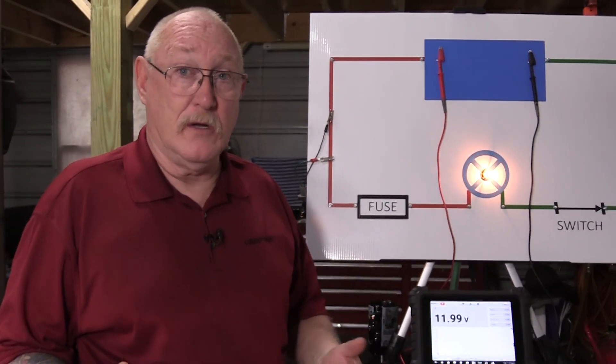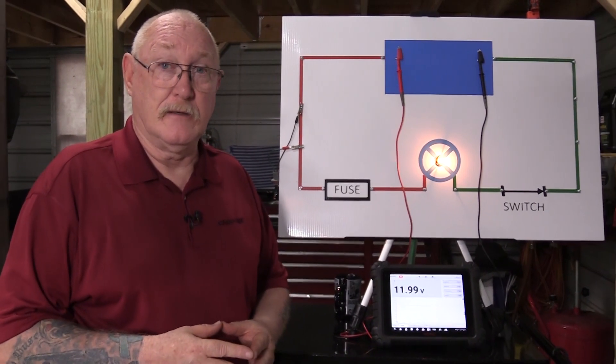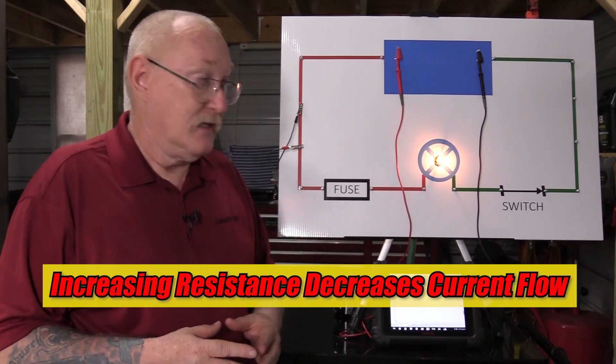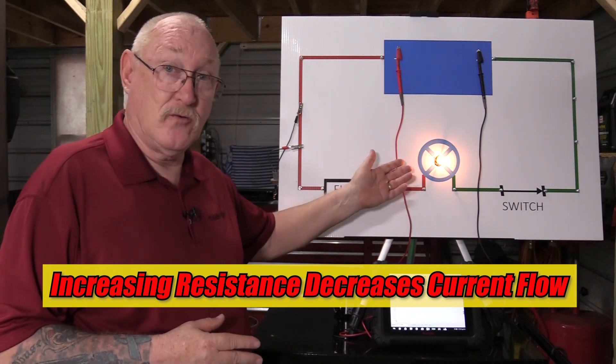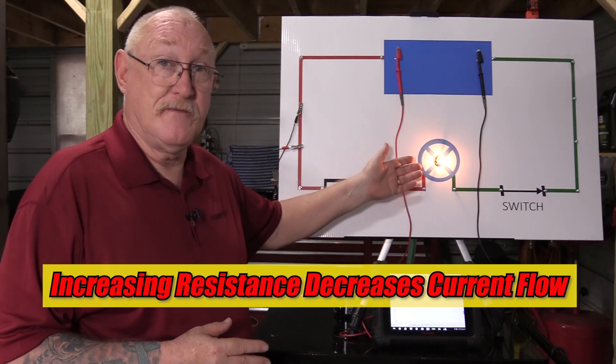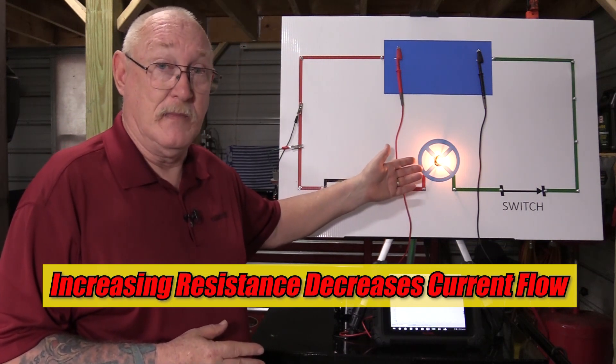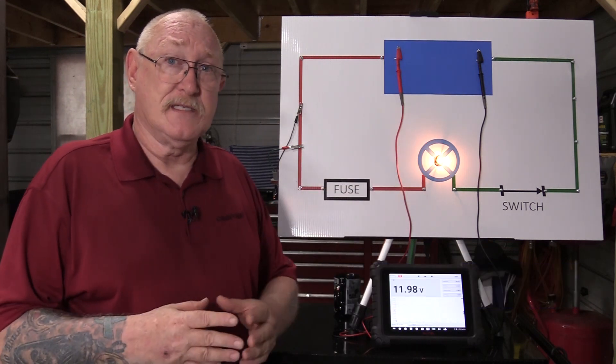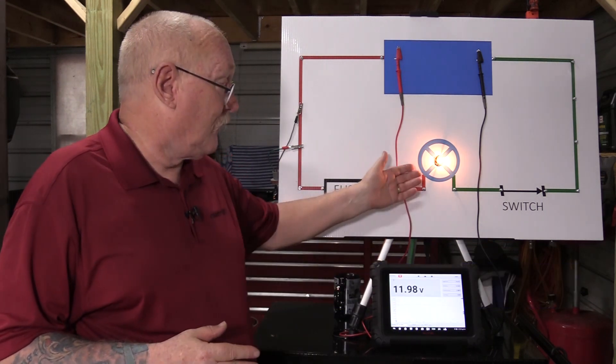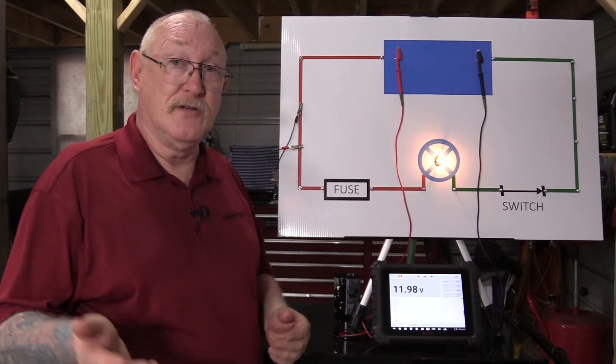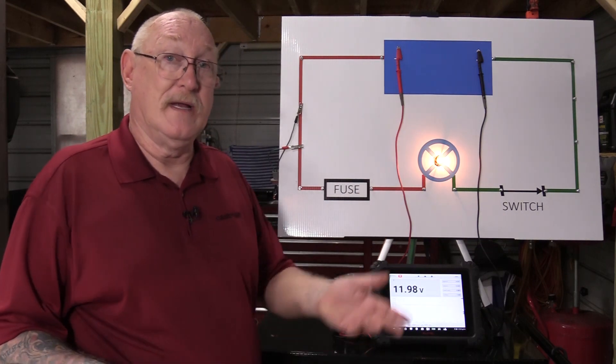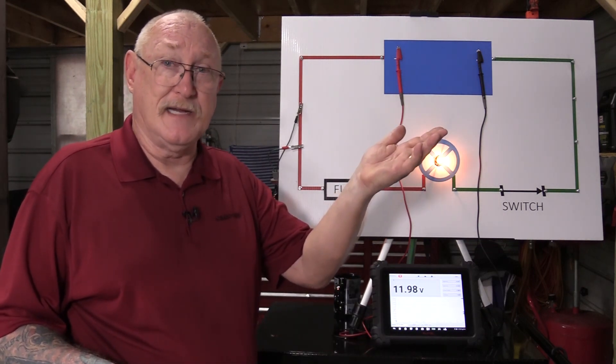What Ohm's law is really trying to teach us here is that if I add resistance, current flow is going to be decreased, which is obvious from the fact that the light is now quite dim. So Ohm's law is telling me that if I want that current flow to be the same, I either have to decrease resistance or increase the amount of voltage supplied to the circuit.